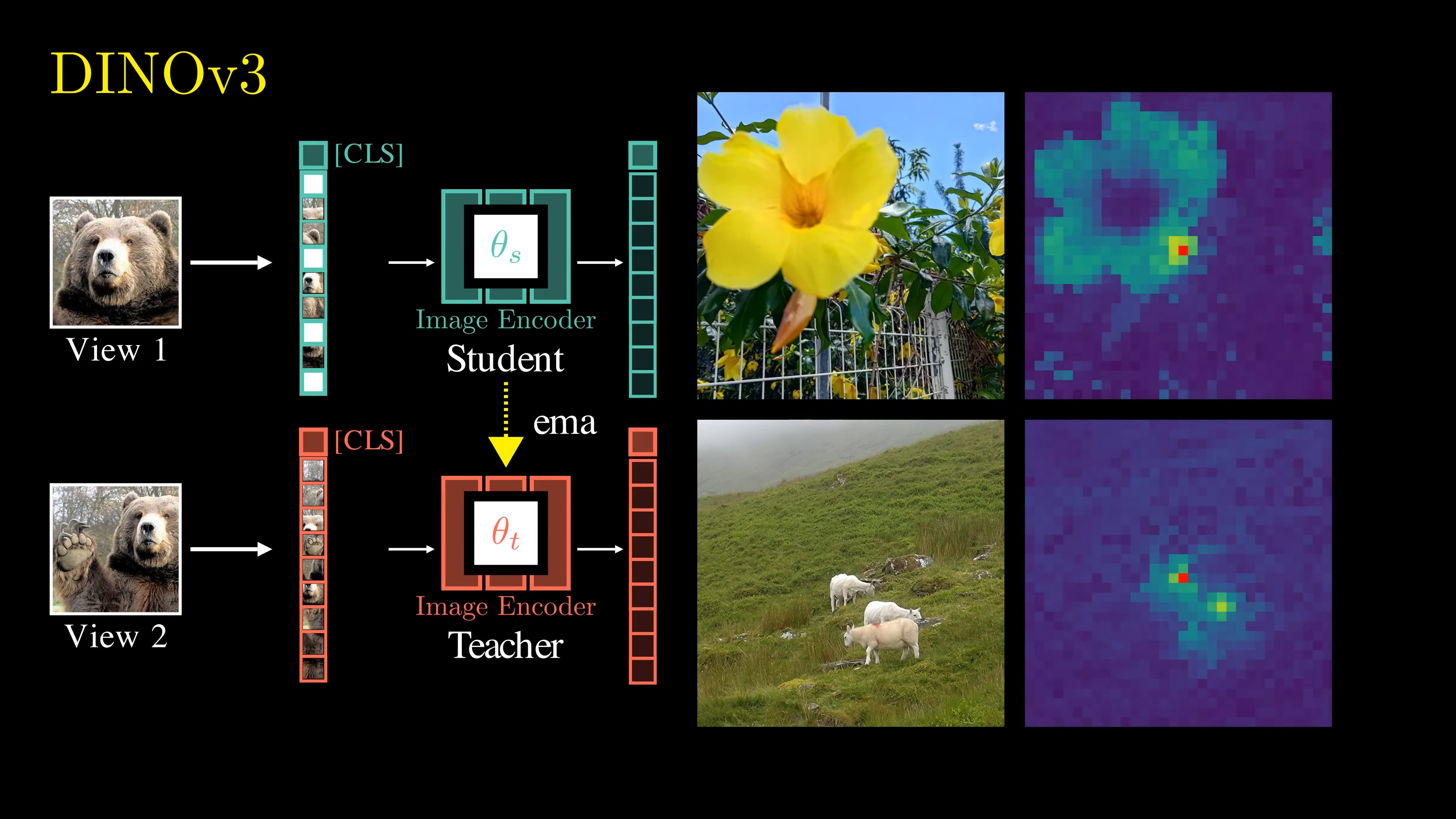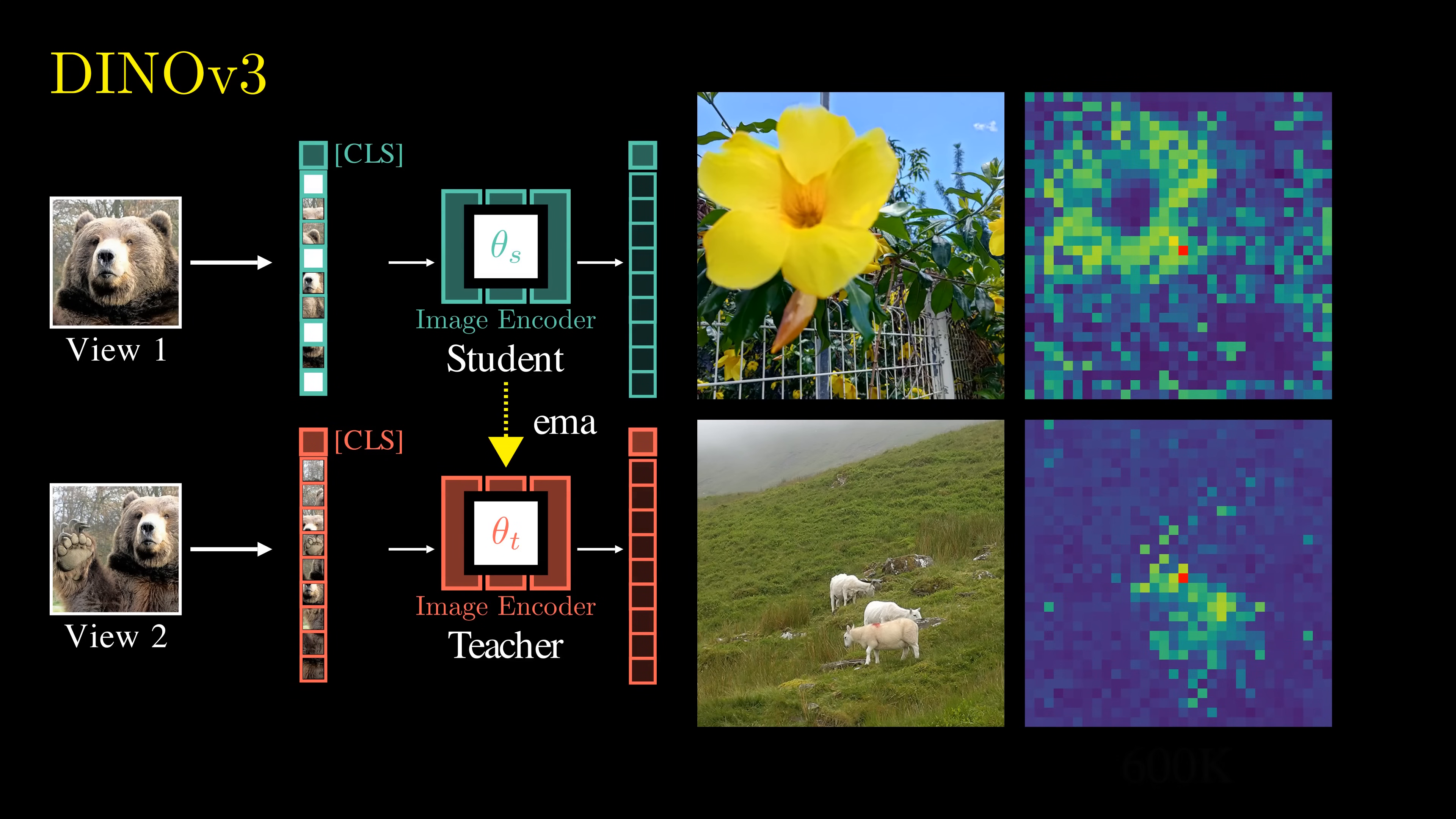As training goes on, we can see how similar the red patch is to others. Over time, the features become less focused, and the similarity maps get noisier. This makes the model worse at dense prediction tasks.